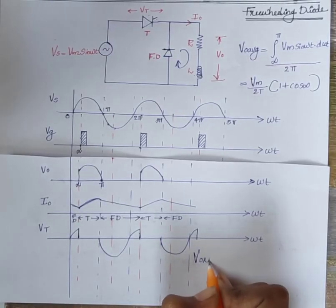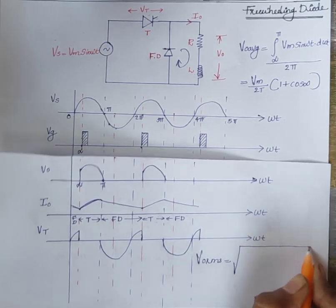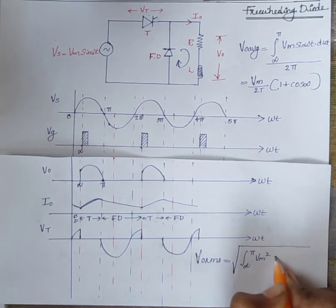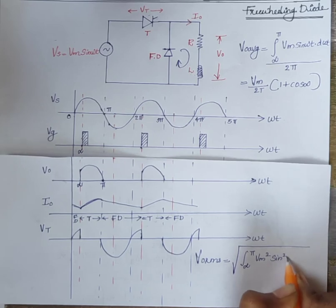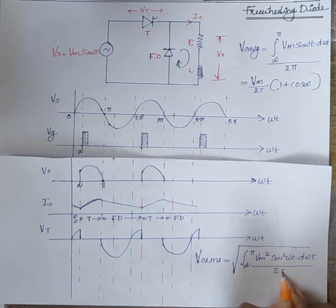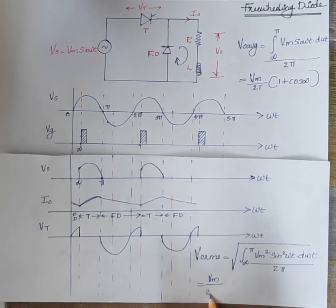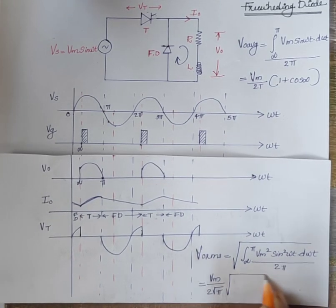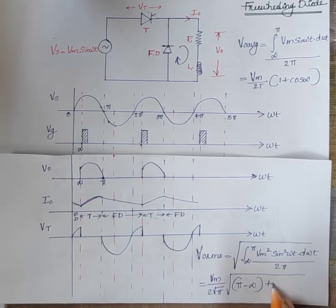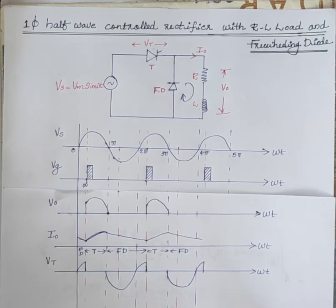Similarly, V0_RMS is equal to the square root of the integral from alpha to pi of Vm squared sin squared(omega t) d(omega t), divided by 2pi, which equals Vm divided by 2 root pi, times the square root of (pi minus alpha plus sin(2 alpha) divided by 2). Thank you.